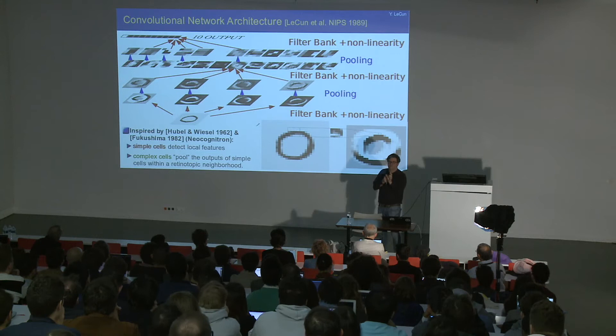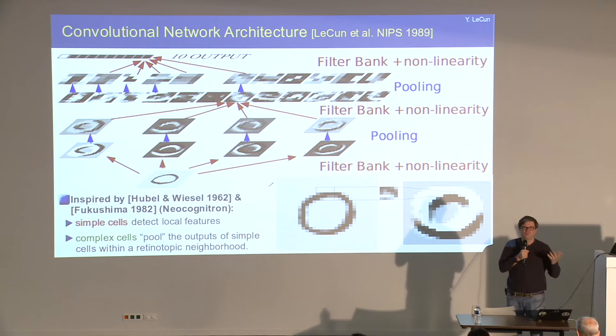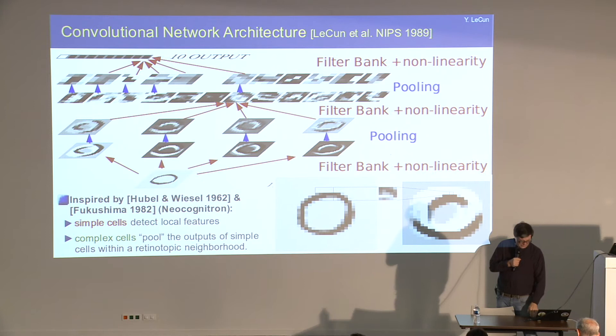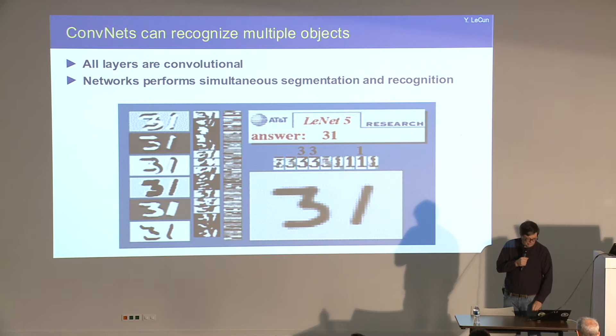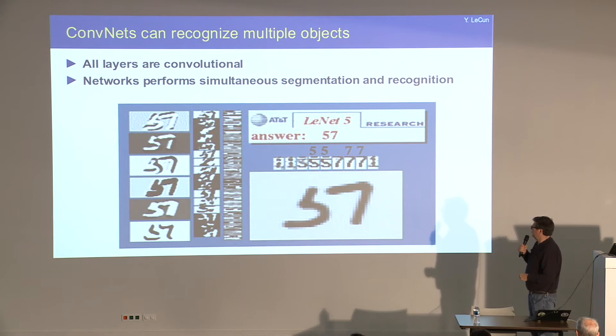A convolutional net is an architecture designed to recognize array data where there are strong local correlations in the features and some sort of translation invariance in the statistics of the signal. It's true for images, audio signals, and basically anything that comes as an array where locality has meaning. The first applications were on character recognition, but we quickly realized we could recognize multiple objects by scanning a convolutional net across a big image — which is efficient because all layers are convolutions.